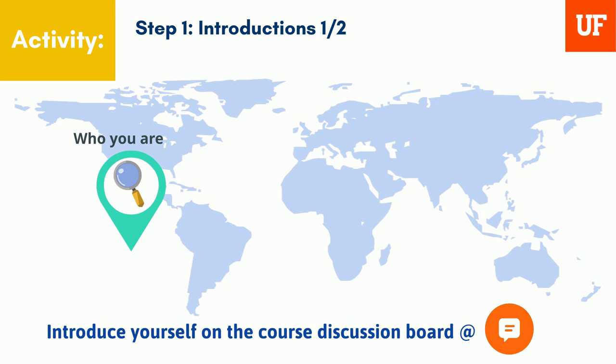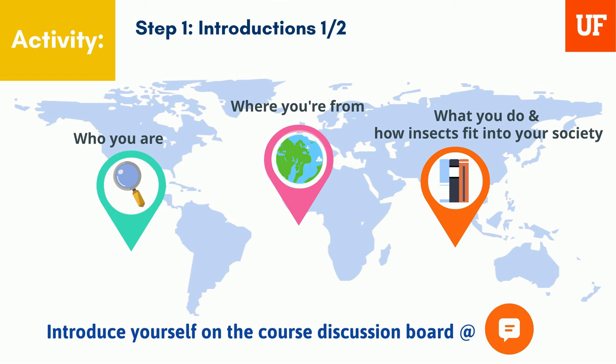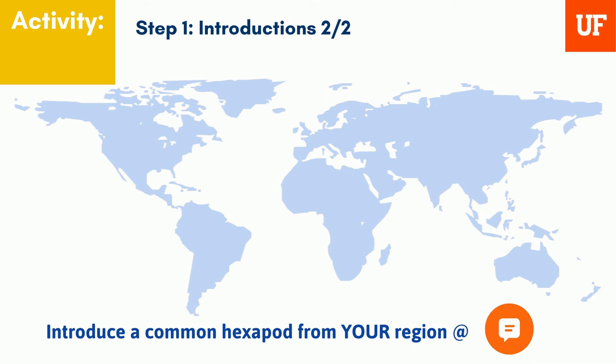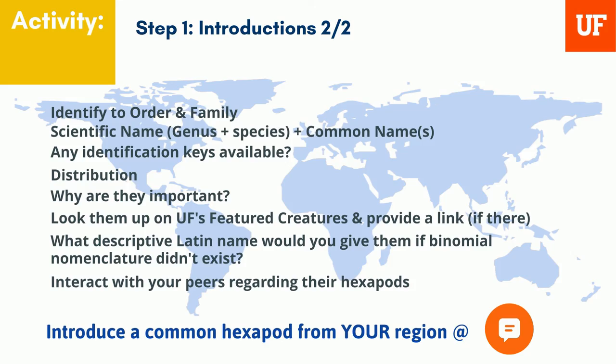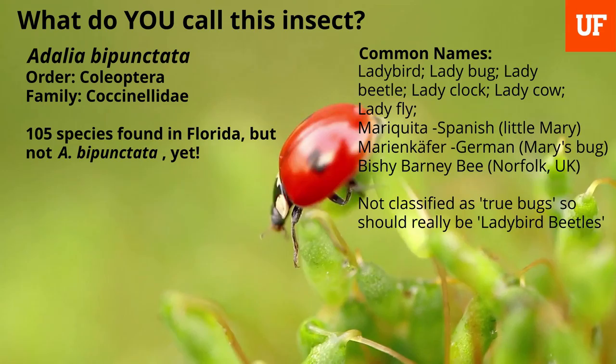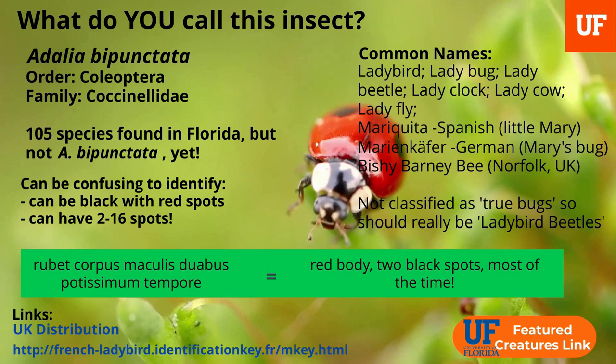Step one: introductions. Introduce yourself, where you're from, and what you do for work or study. Give us an idea about how insects fit into your society. You can find my own example on the discussion board. Then introduce a common hexapod from your region. This slide shows a list of ideas for you to structure your introduction to the class. Meet my hexapod, commonly called a ladybird in the UK. Don't forget to chat to your classmates about their hexapods on the discussion group, where you'll find my hexapod too.